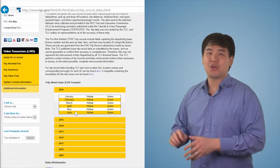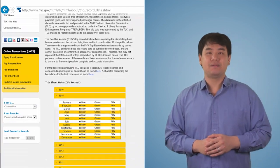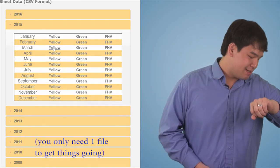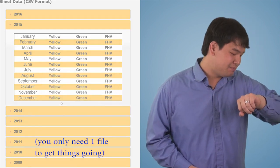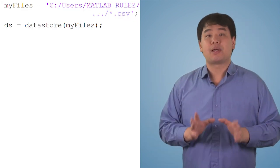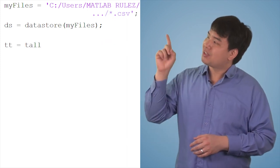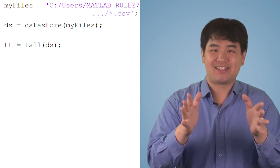So first, we're going to download all those files into the same folder. Next, we create a datastore object that points to those files. And finally, the code to bring it into a tall array is just tall of datastore. It's that easy.